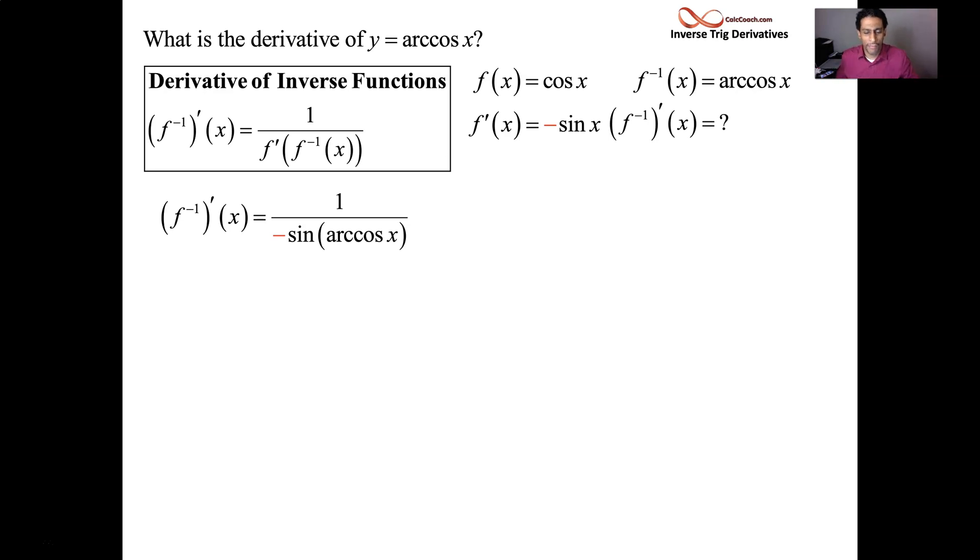Okay. And we'll use the Pythagorean identity again. The fact that sine squared plus cosine squared equals 1. So the sine squared is going to be 1 minus the cosine squared. So the sine of x will be the square root of that. And so I'm going to take that equation, replace the x with arc cosine. The sine of arc cosine of x is equal to the square root of 1 minus the cosine of arc cosine of x squared.